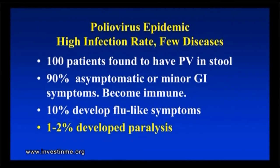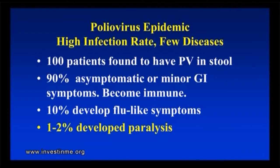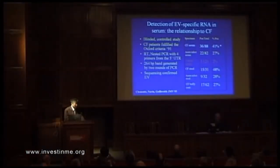Just so everyone understands this: if you look at the polio epidemics that occurred in the 1940s and 50s, there were very high infection rates, but very few cases of paralysis. Epidemiologic studies show that if you check everyone in the neighborhood, about 100 people are shedding poliovirus in the stool, but 90% are totally asymptomatic. They have no disease or very minor gastrointestinal symptoms. They will become immune. 10% will develop flu-like symptoms — and these are the patients you don't exercise. Franklin Roosevelt had flu-like symptoms, and the White House physician told him to go out and run. A day or two after that, he developed paralysis. You don't exercise when you have enterovirus infection. That's well documented with poliovirus infection and eventually also with non-polio enterovirus infections.